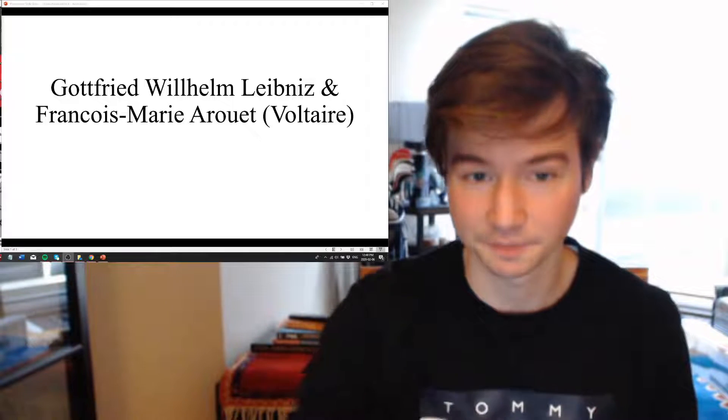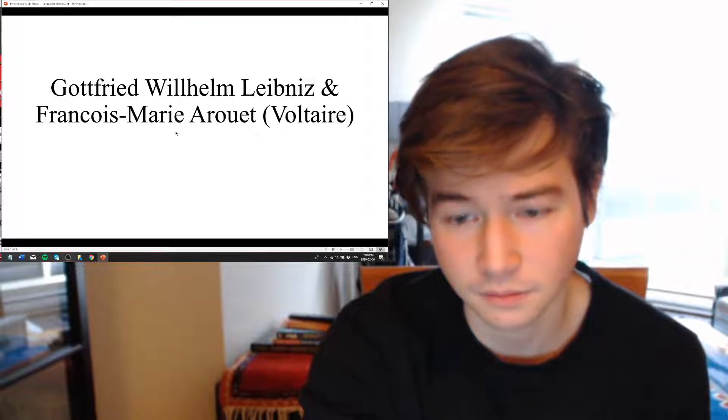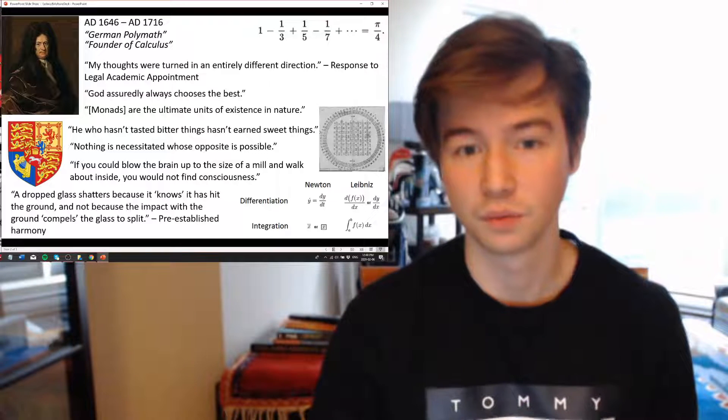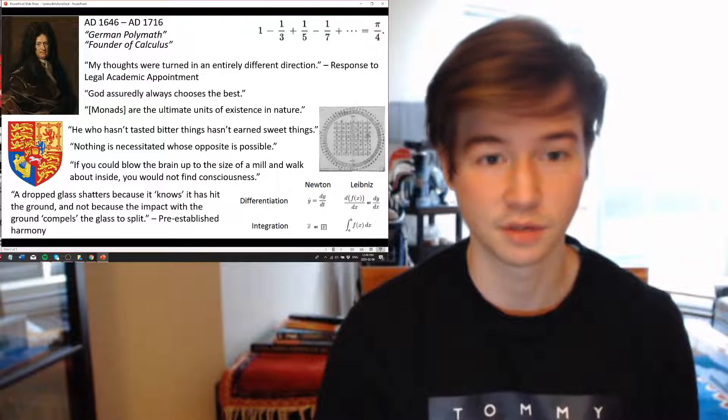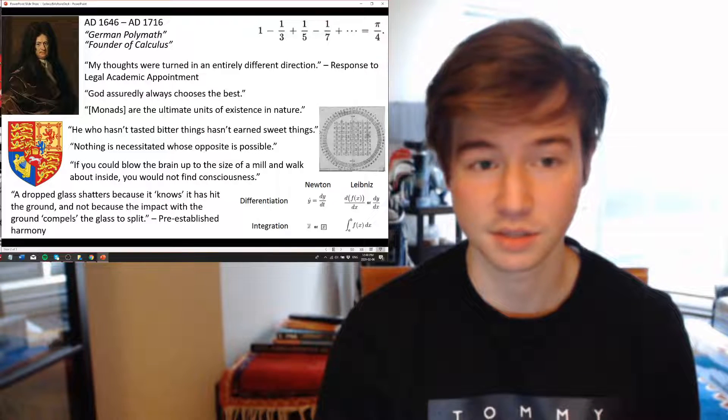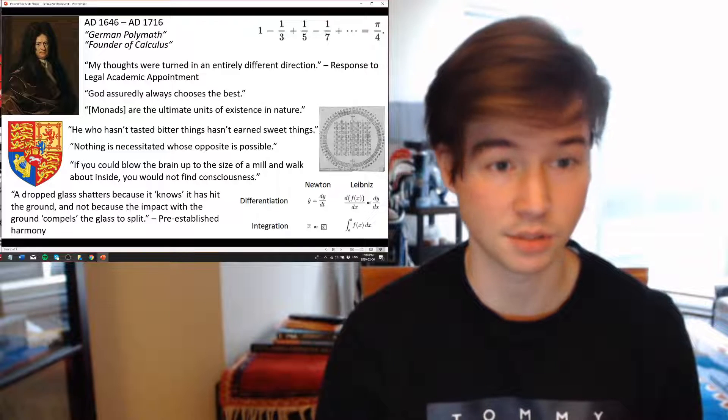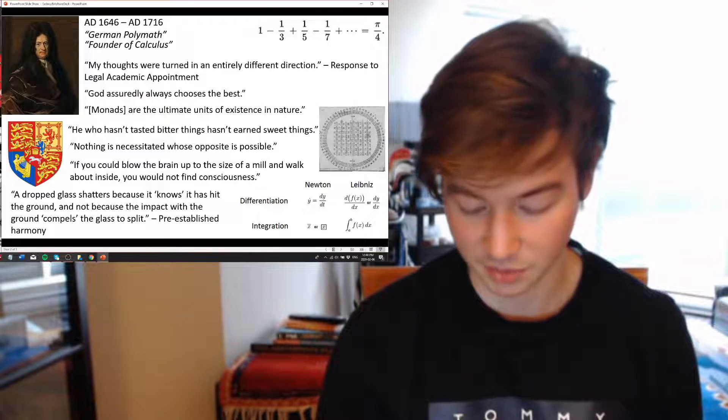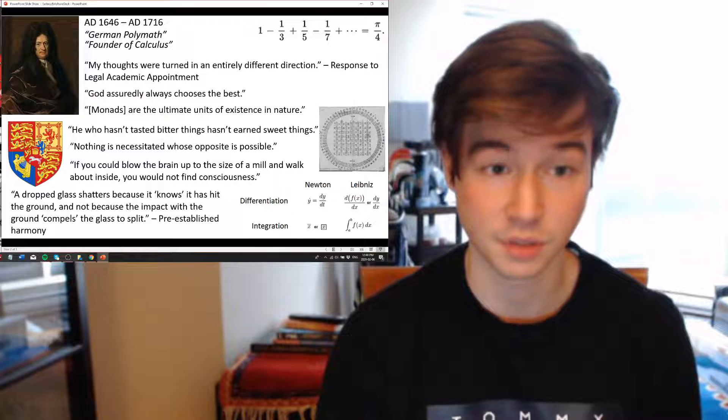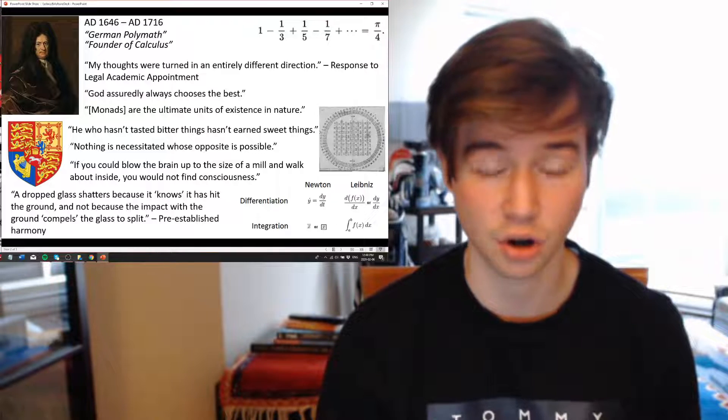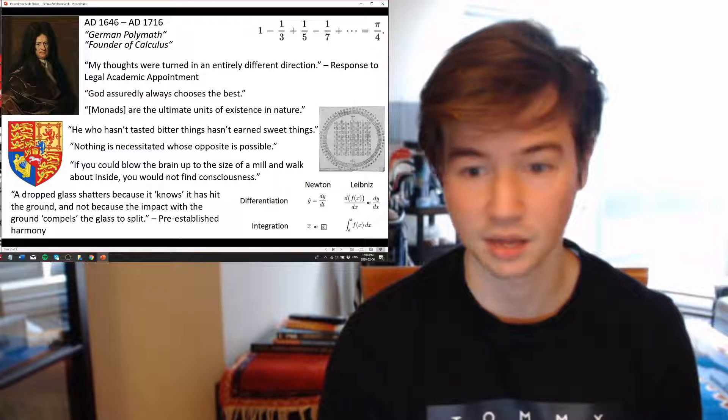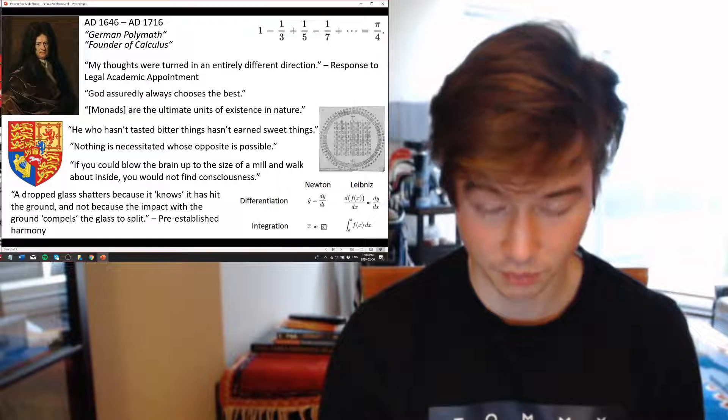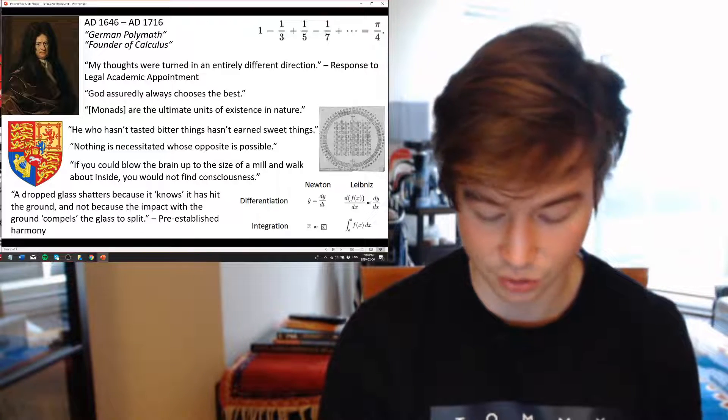So without further ado, let's begin with Leibniz. Leibniz was a German polymath, and I know we've gone through many polymaths in this series, but I think Leibniz, perhaps almost above anyone else, exemplifies this feature. He's probably the most iconic representation of 17th century rationalism.